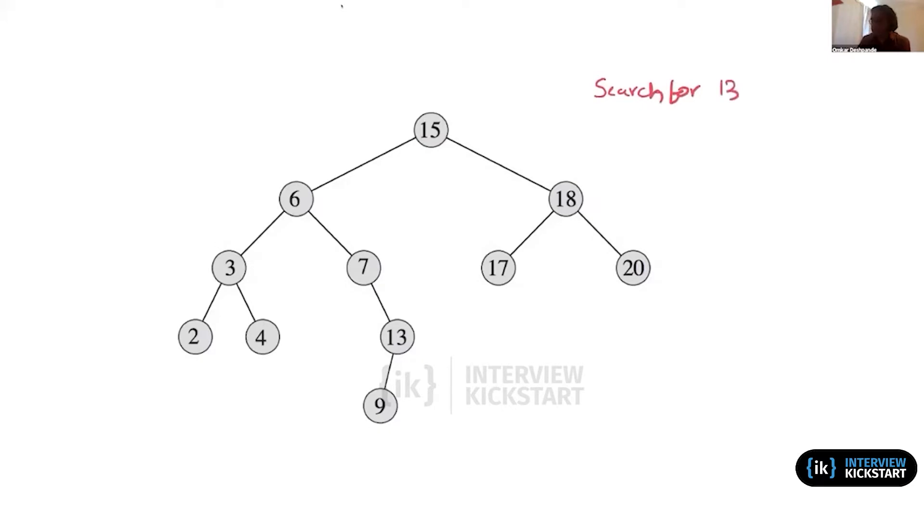Then we start by looking at the root and comparing 13 to 15. Since 13 is less than 15, we can decrease the problem by going down the left subtree. In one comparison, we have reduced the problem size by at least four elements here.